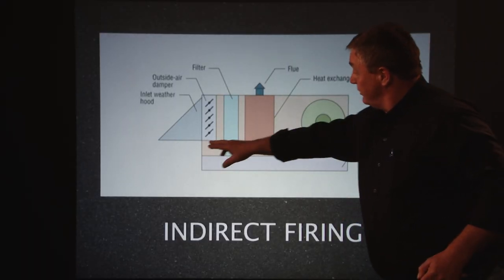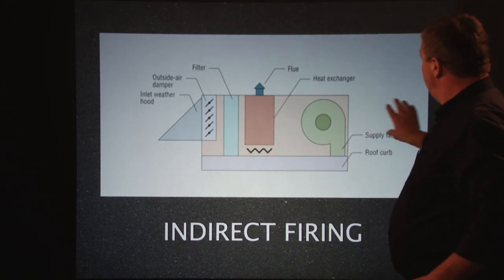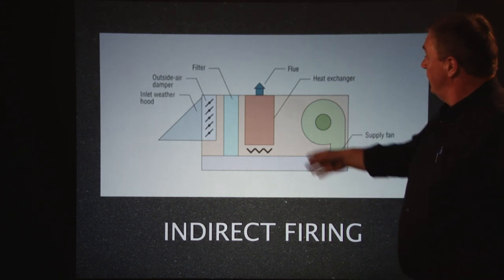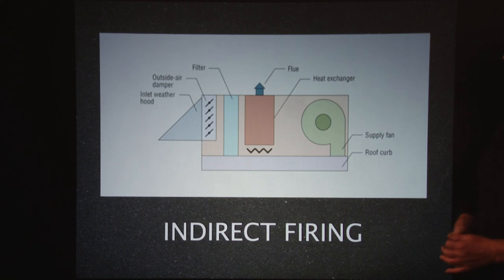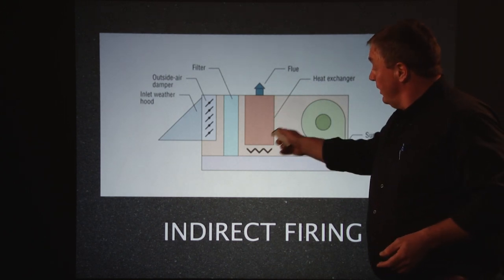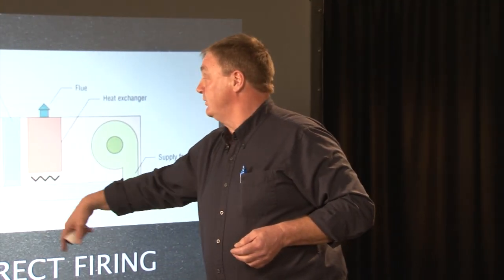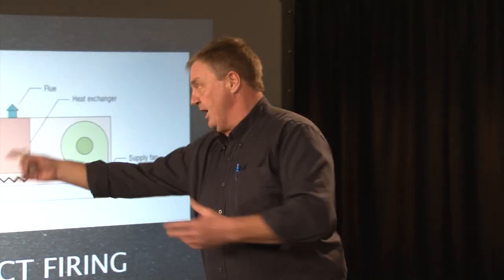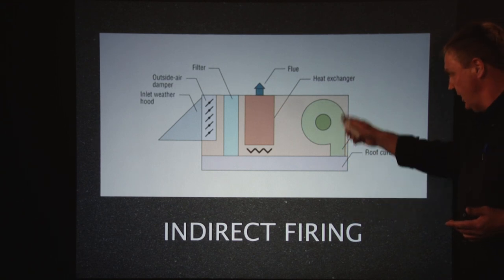Here we have the indirect fire system. The difference is you'll have a heat exchanger. You'll still have the weather hood, the damper, and the filter, with your heat source underneath, passing through a heat exchanger and again through the fan, down through the roof — but these ones will have a flue because the exhaust gases are vented out and away. The inspection part is to see if the heat exchanger is working well, not damaged or blocked, and that the filter's in good condition — a bird hasn't got in and decided to make a nest in front of the heat exchanger, reducing its efficiency.